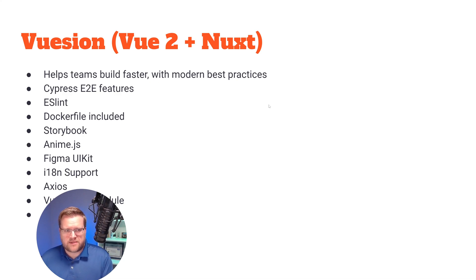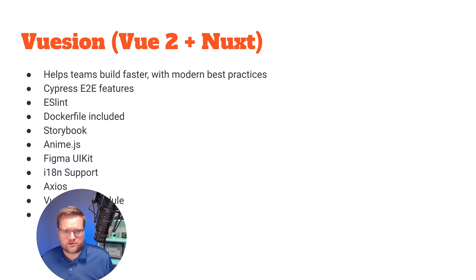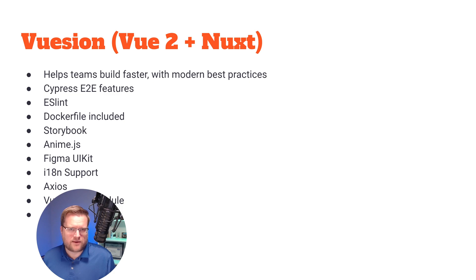This neat one is called Vusion — it's kind of Vue 2 plus Nuxt, and helps teams build faster with modern best practices. It has Cypress end-to-end testing, ESLint, Dockerfile support, and Storybook — which I haven't seen in many Vue starter templates. It also has AnimeJS for animation, a Figma UI kit, internationalization, Vue Apollo for GraphQL, and Progressive Web App support. It combines a bit of Nuxt and Vue 2, which is really interesting — definitely check it out.